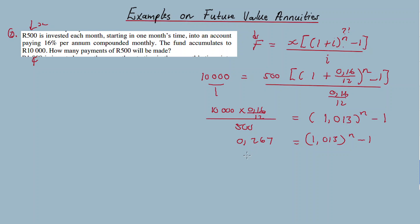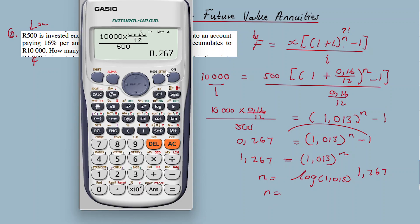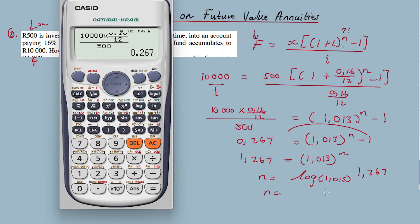0.27 equals 1.013 to the exponent n minus one. Transpose the figure positive, so we'll end up with 1.267 equals 1.013 raised to exponent n. Therefore, n equals log base 1.013 of 1.267.